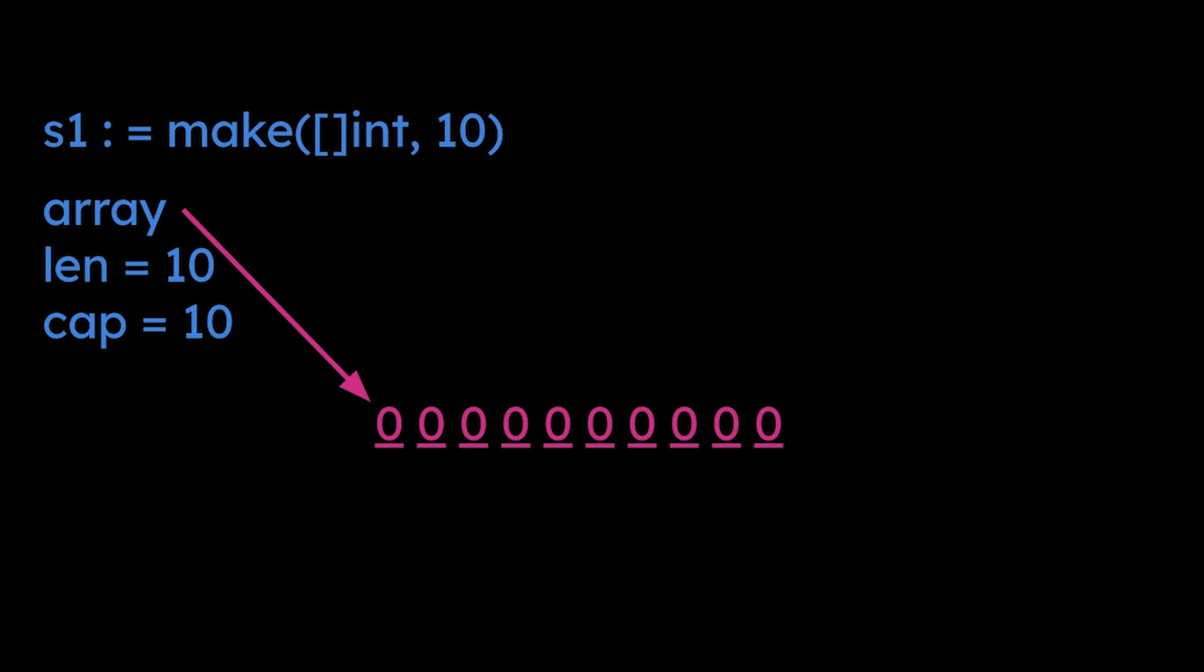One is a pointer to the first item in the array, so it points to the memory address of the first index. Then we've got a length and capacity. For this particular slice, they're both set to 10. I'm going to come back to that concept of capacity.